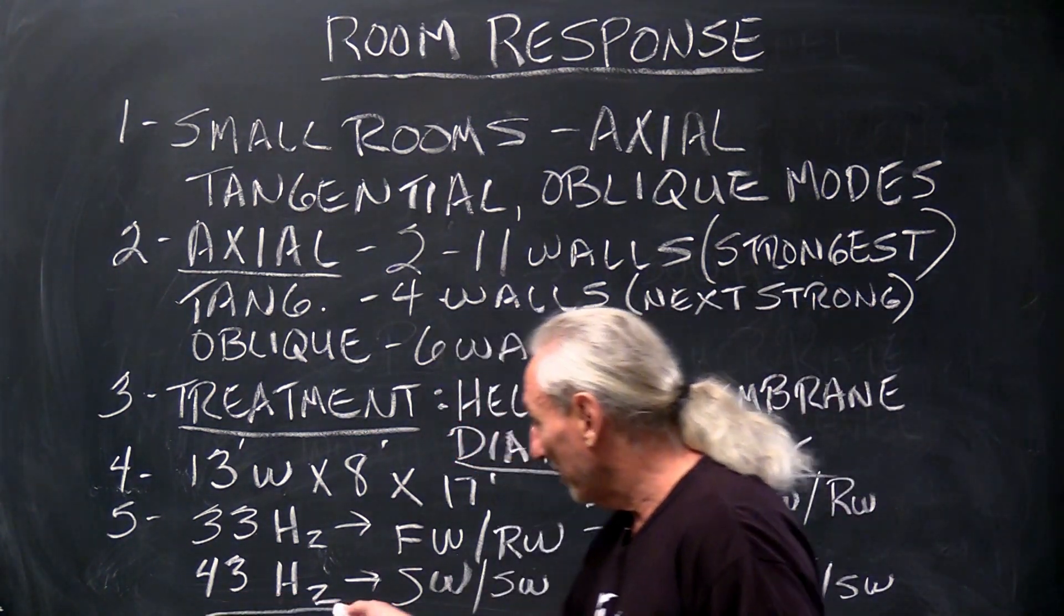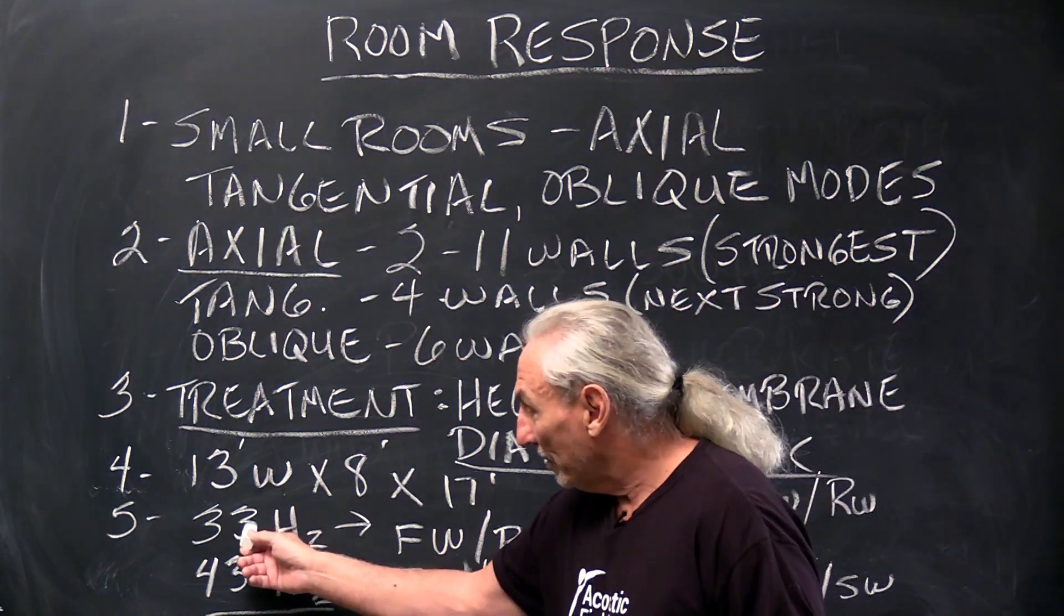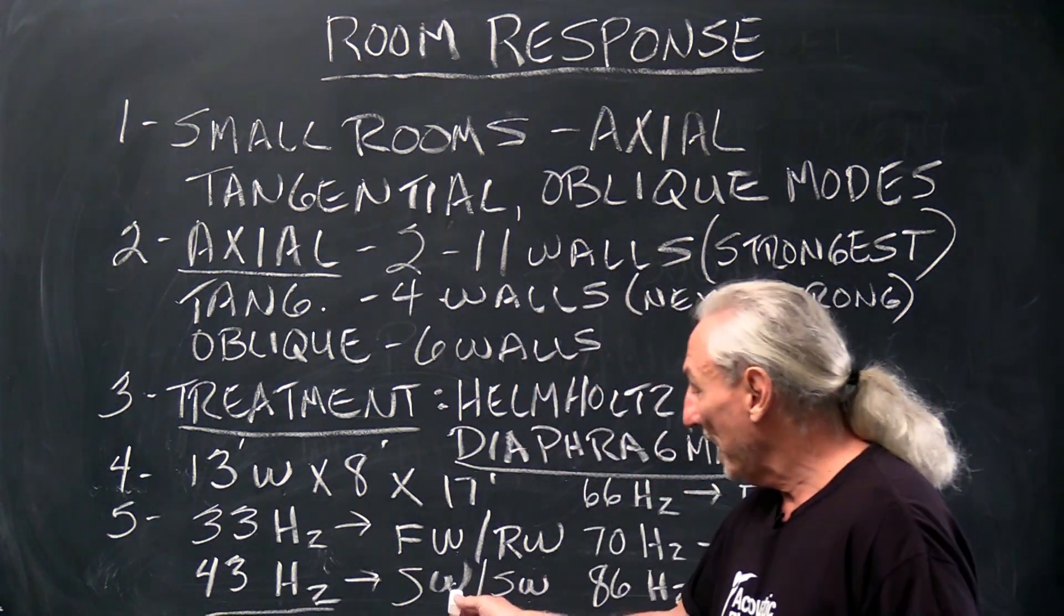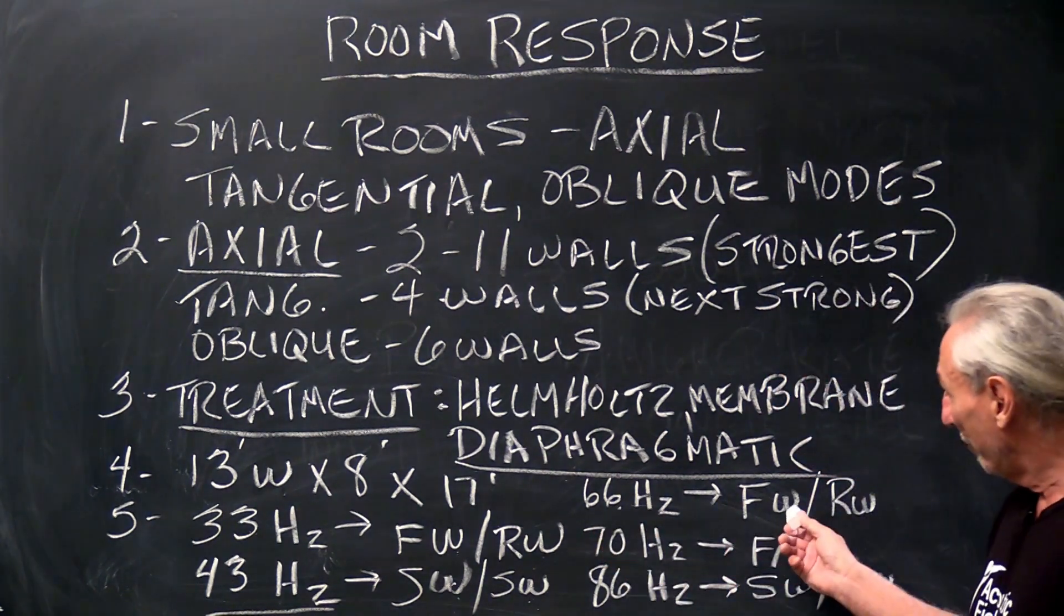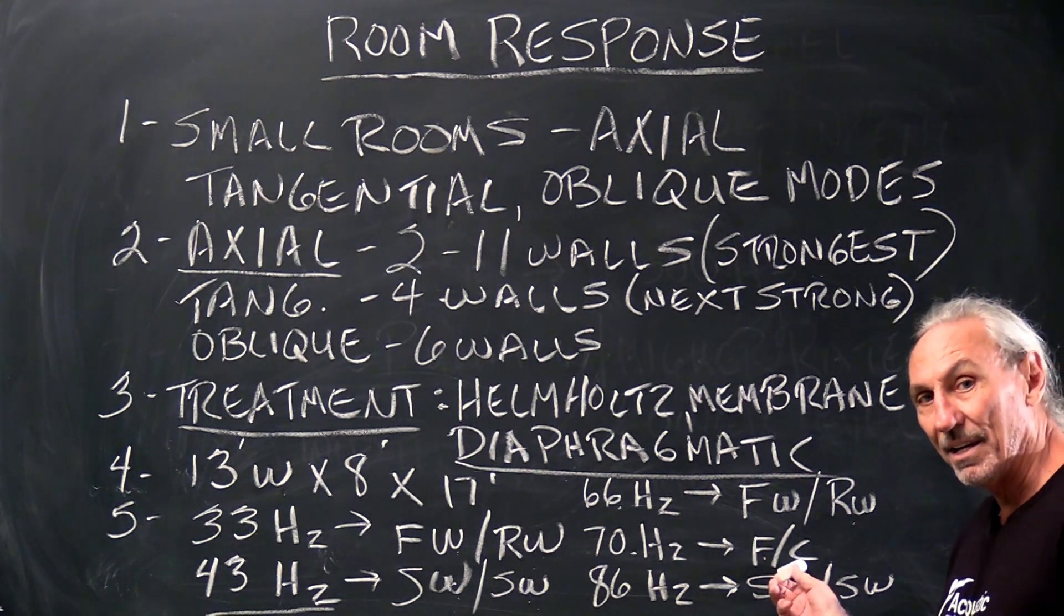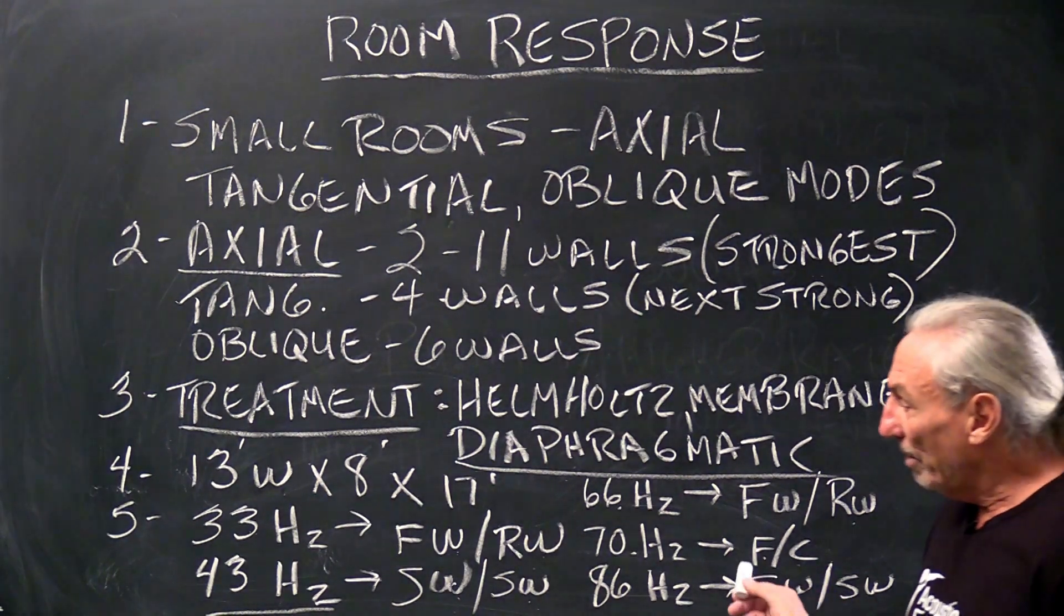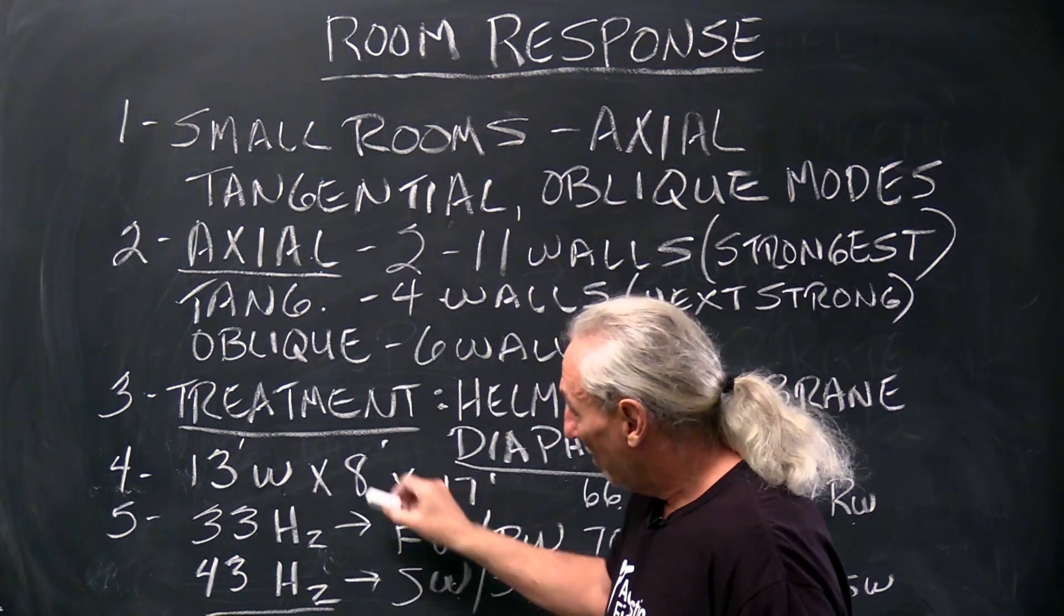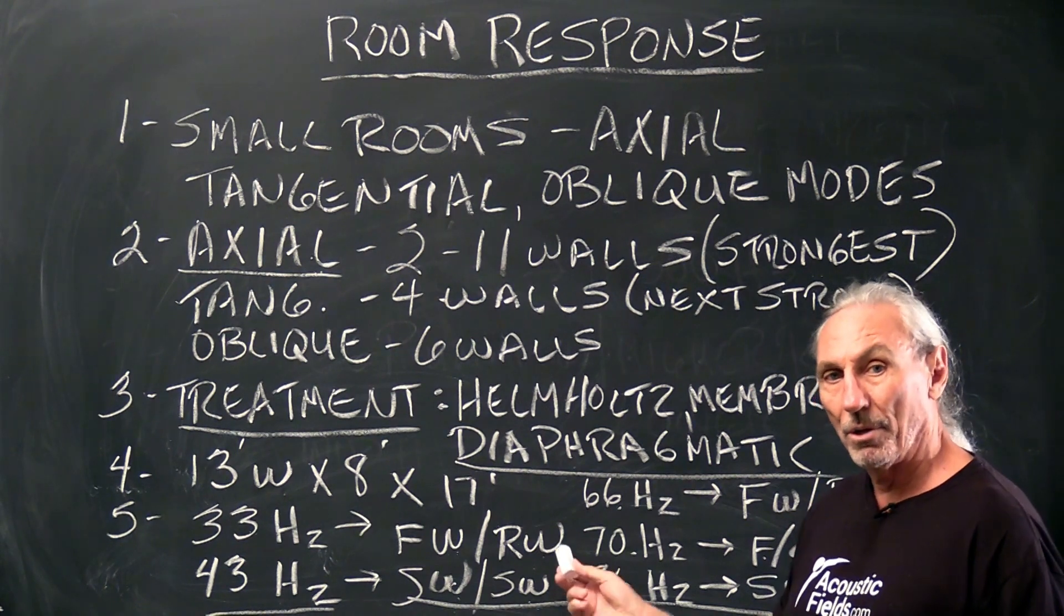At 43 cycles, side wall to side wall. So at 33 cycles, longer energy, front wall to rear wall, at 43 cycles the axial modal issues are side wall to side wall. At 66, front wall to rear wall. At 70, floor to ceiling. At 86 cycles, side wall to side wall. So every room dimension has axial modal issues but they're at different places in the room and you can see by this example of the locations.